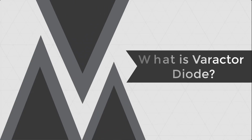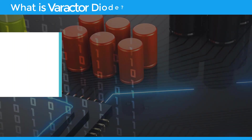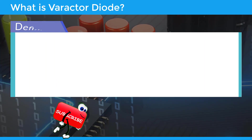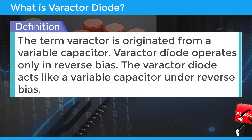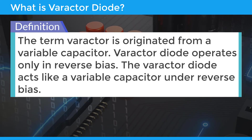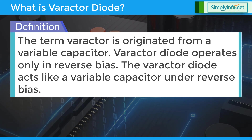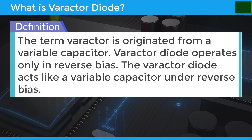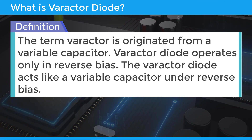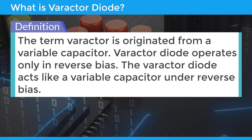What is varactor diode? The term varactor is originated from a variable capacitor. Varactor diode operates only in reverse bias. The varactor diode acts like a variable capacitor under reverse bias.